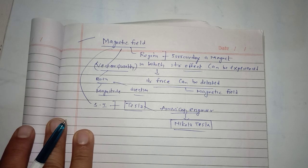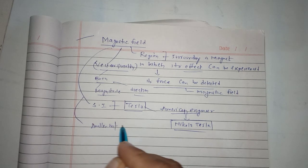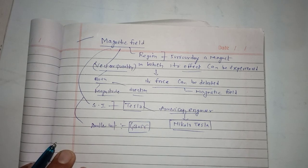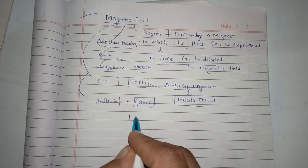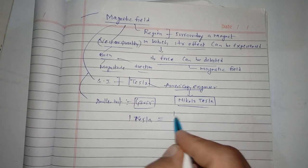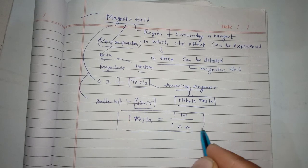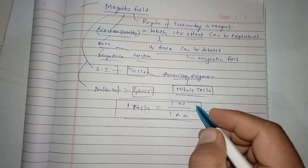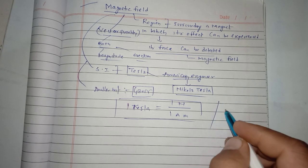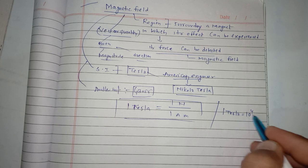Here the smaller unit of magnetic field is Gauss. Now here, one Tesla is equal to one Newton upon one Ampere meter, and one Tesla is equal to 10 to the power 4 Gauss.